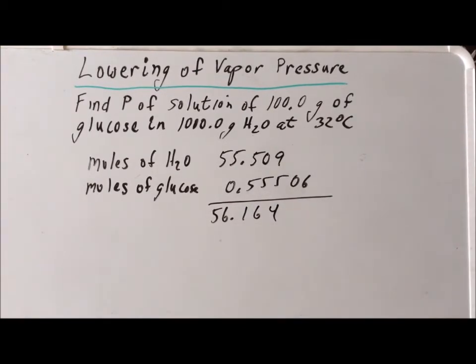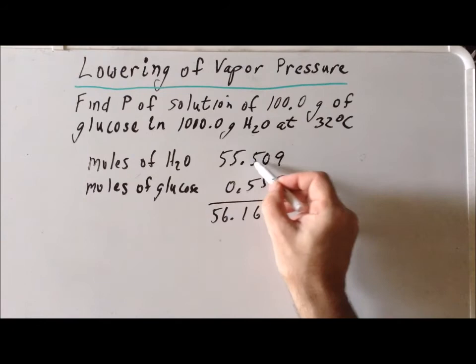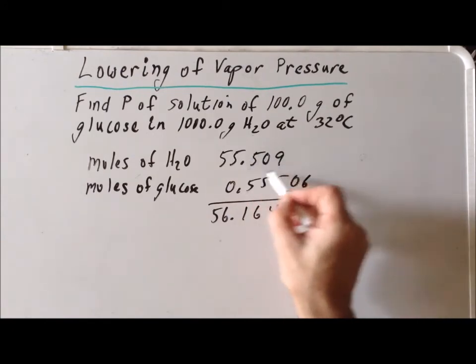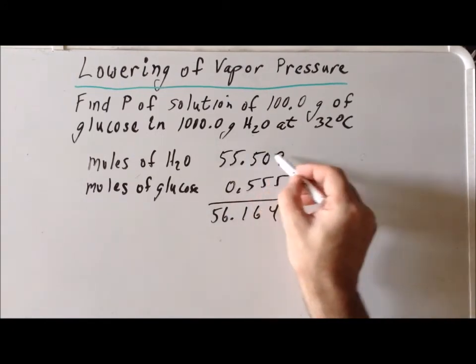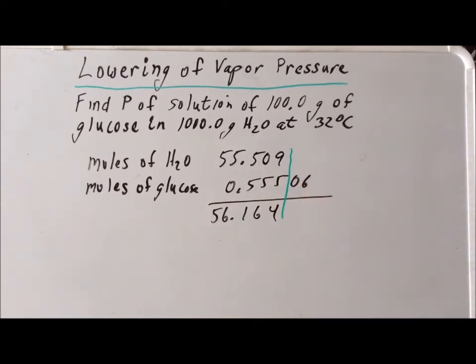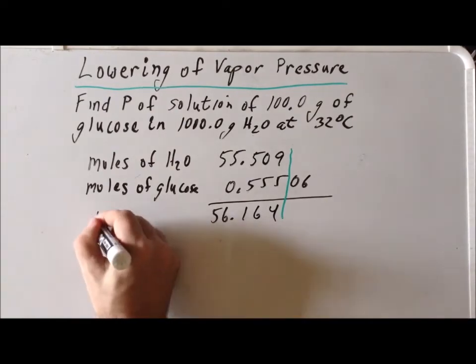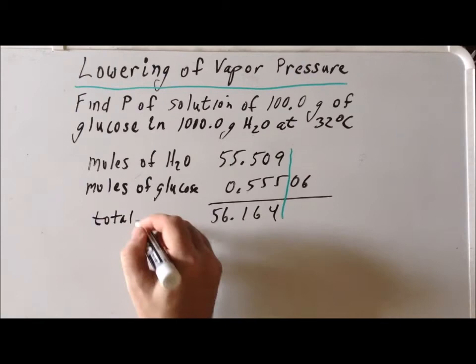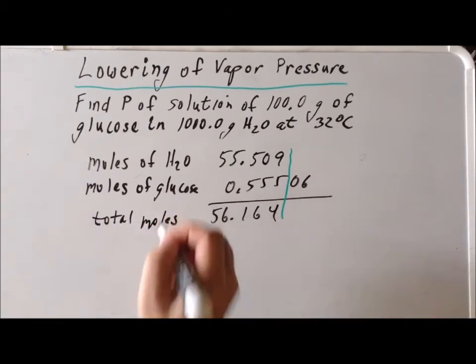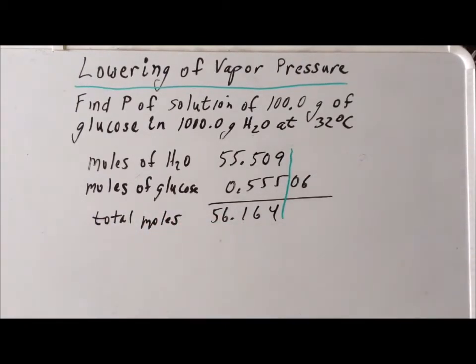Here we make use of the rule for significant figures for adding or subtracting two values, which is slightly different than the rule for multiplication and division. We see that the minimal number of decimal places for the moles of water is three decimal places, so we want to round our answer to only three decimal places. This tells us that the total moles is 56.164.